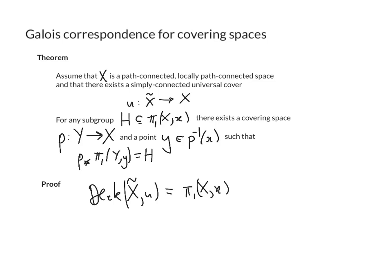Now the deck group acts on x tilde, and what we need to do first is to prove that this action is properly discontinuous. So the first thing we're going to do is to prove the deck group action of pi 1x on x tilde is properly discontinuous.